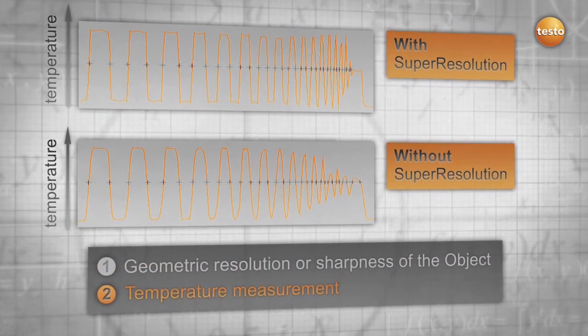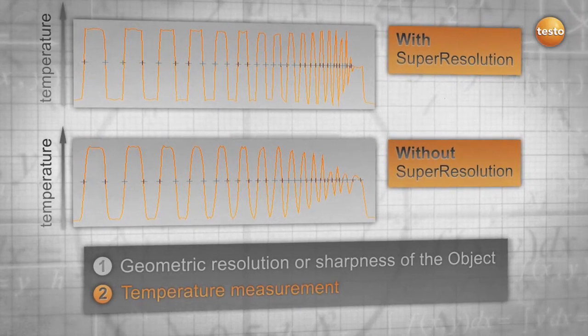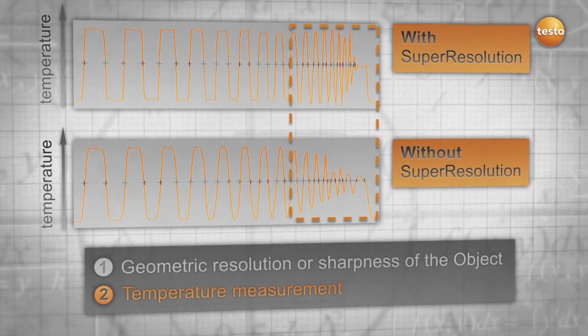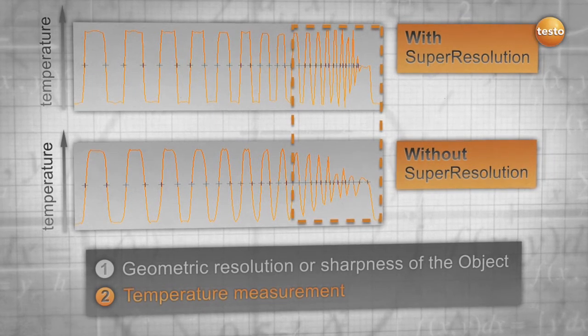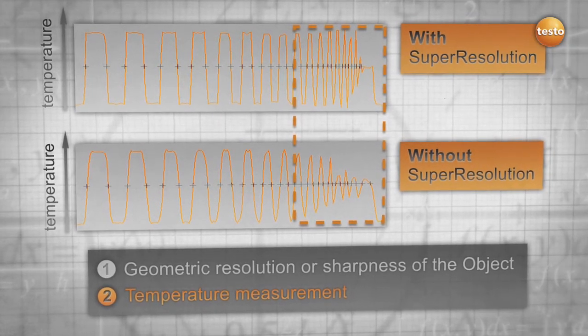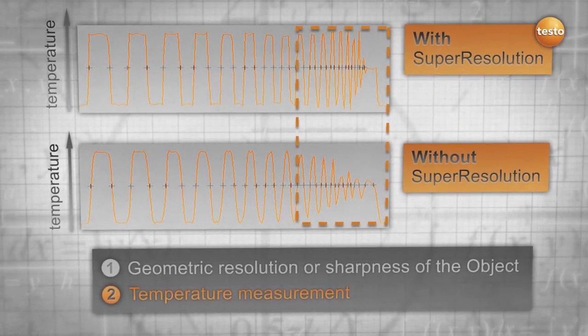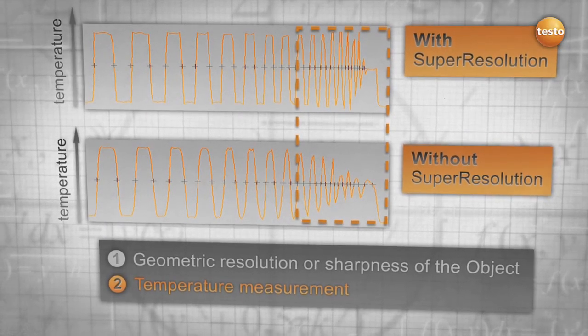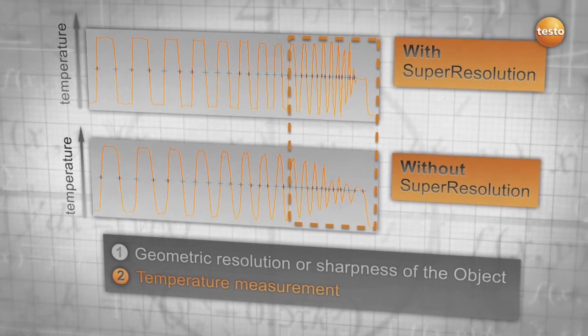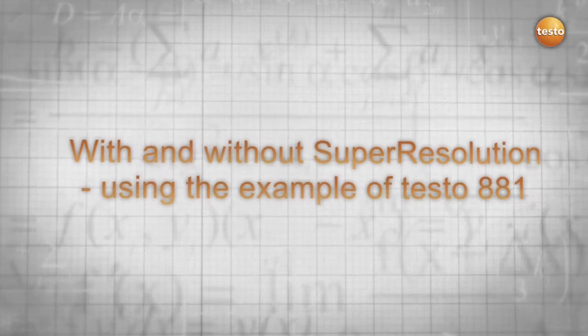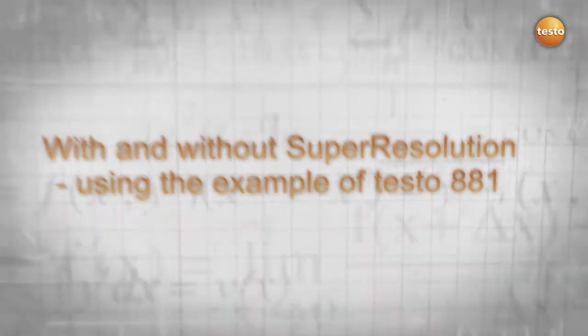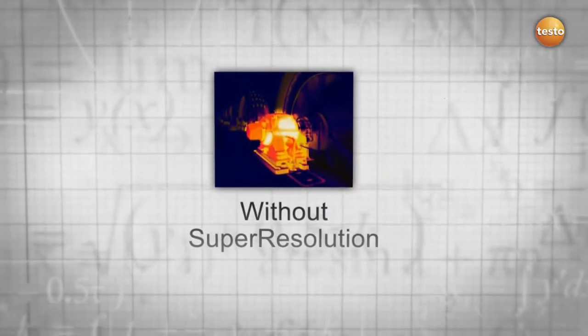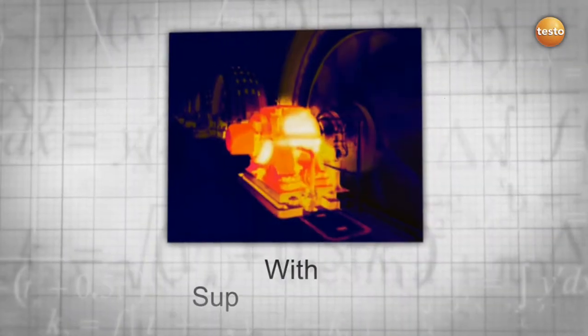Without Super Resolution, the temperature is not correctly displayed where the slots get tighter, and the thermographer might be in danger of logging in wrong numbers which might lead to wrong conclusions. With Super Resolution, the measurement even of tiny structures remains overall more accurate.